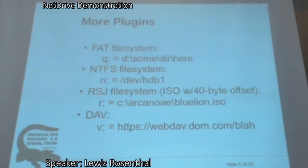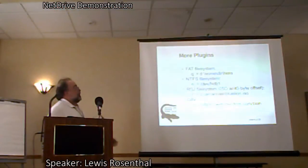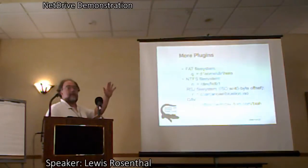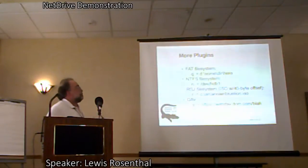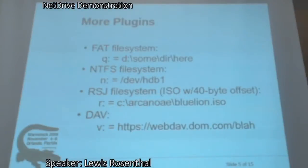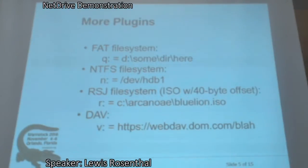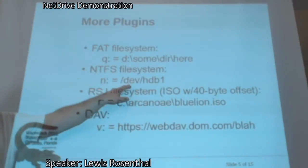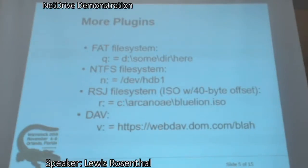Some more plug-ins. The FAT file system: if you need to access a FAT volume, and I believe the FAT file system driver also handles VFAT — long file names. It works just like the local file system driver. The NTFS file system is a little tricky. If you're not used to Linux device names, it looks a little odd. Essentially, you're mapping drive N to the device — hard disk B, partition 1. It's a little tricky for NTFS; it's on my list to complain about.